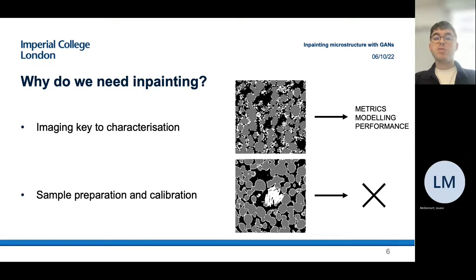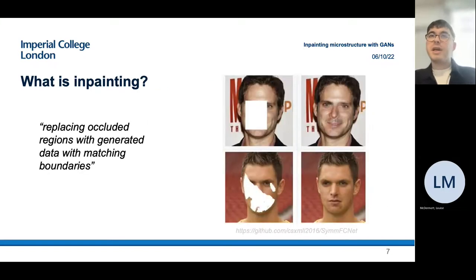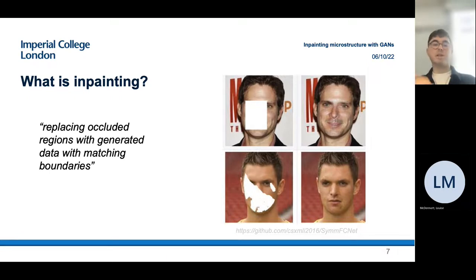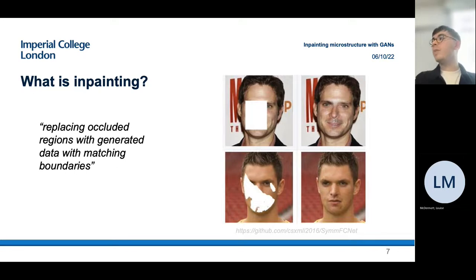What we want to do is replace the destroyed or invalid parts of the image with valid data. This has been done in other areas — not so much in material science, but in more prominent machine learning areas like generating faces and scene recreation for self-driving cars. Essentially, inpainting is replacing an occluded region — something masked as bad — with generated data that has matching, seamless borders with the ground truth.